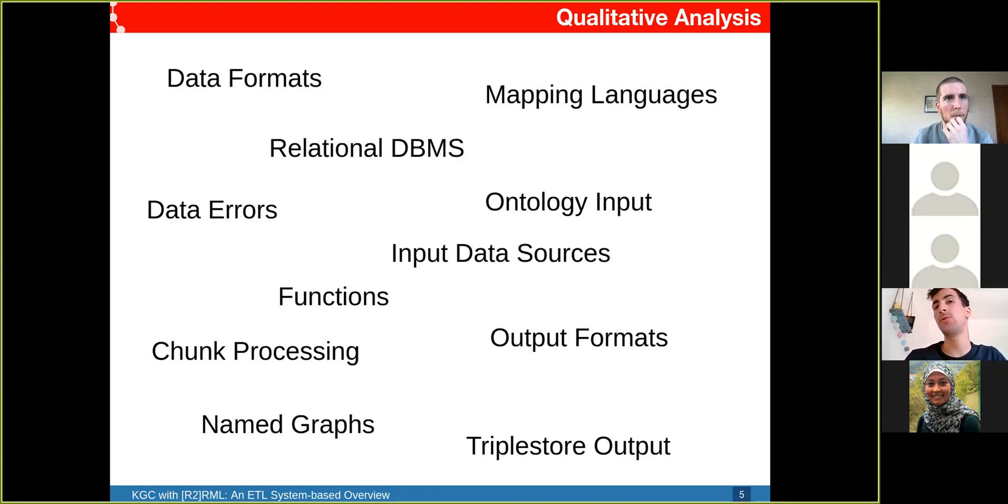OnTop is the only one able to materialize in chunks, which is good for scalability. DB2Triples does not support named graphs, and Chimera is the only engine able to write triples directly to a SPARQL endpoint.